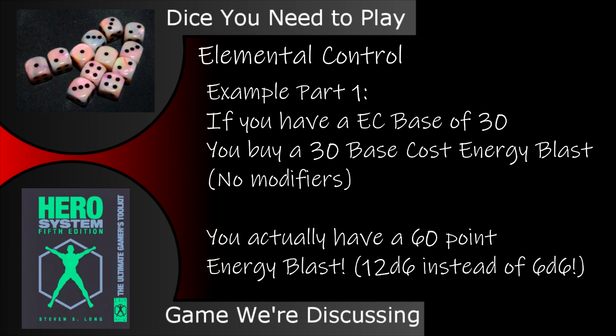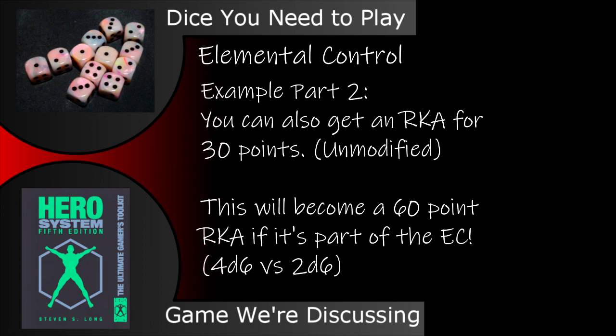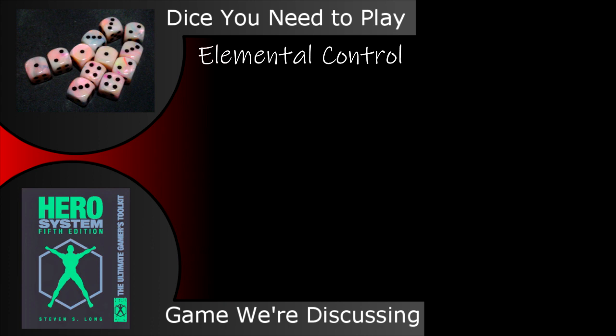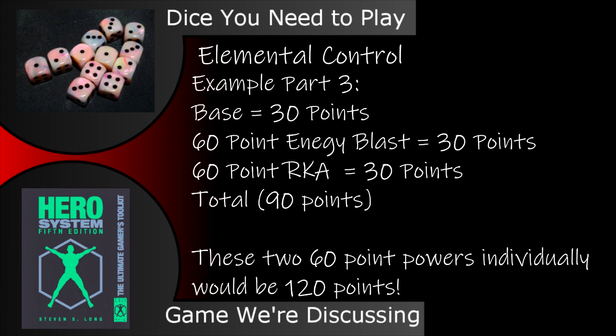The base of the elemental control gets added to the active cost of every slot. Meaning, if you have a 30 point base for an elemental control and you get a 30 point base cost energy blast with no modifiers, your active cost for the energy blast is actually 60 — 30 from the base, and 30 from the energy blast itself. You can also buy a ranged killing attack slot for another 30 points, and if left unmodified, that'll also be treated as a 60 point ranged killing attack. So for 30 points for the base, 30 points for the energy blast, and 30 points for the ranged killing attack, you spend 90 points on these two powers using the elemental control. By contrast, if you were to buy these two powers independent of an elemental control, you'd spend 120 points — 60 points for the energy blast and 60 for the ranged killing attack.